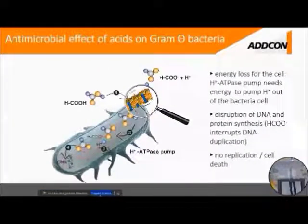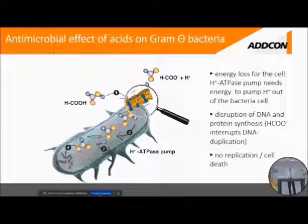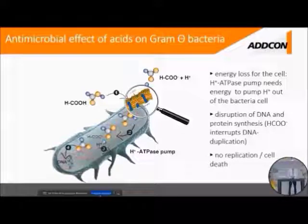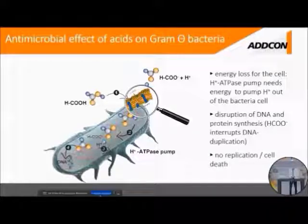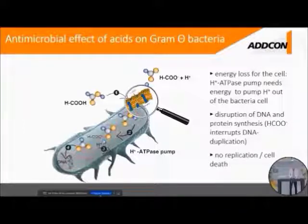Speaking of regular acidifiers, just a short recap: the antimicrobial effects of acids or acid salts against bacteria are mainly directed against gram-negative bacteria, as shown on the slide. The organic acid in its unassociated form is able to pass through the cell membrane of a gram-negative bacterium, acidify the bacteria cytoplasm — which is usually at a pH of around 7. The bacterium tries to restore its normal pH level and starts pumping out the additional hydrogen ions. This leads to an energy loss, which can furthermore lead to a disruption of DNA and proteins, and the bacterium dies in a rather short period of time.